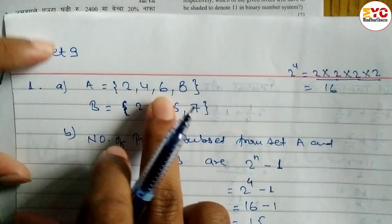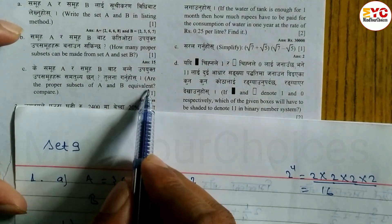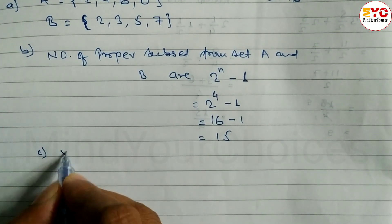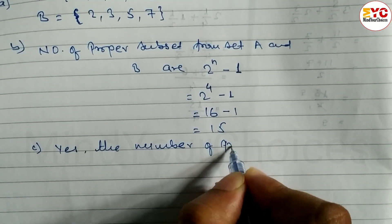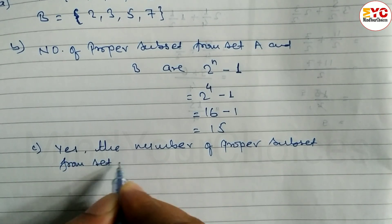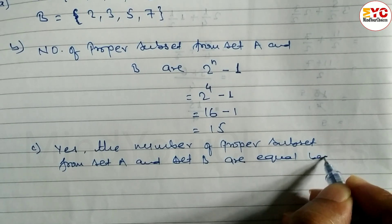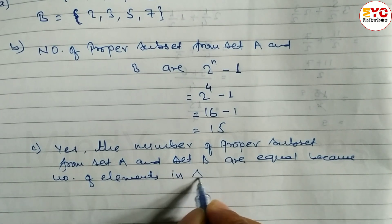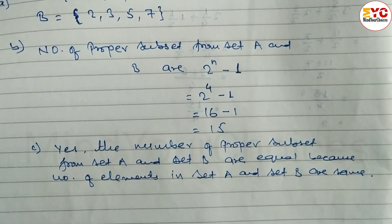Yes, they are equal. The number of proper subsets from set A and set B are equal, because the number of elements in set A and set B are the same or equal. Hope you understand question number 1 from set 9.